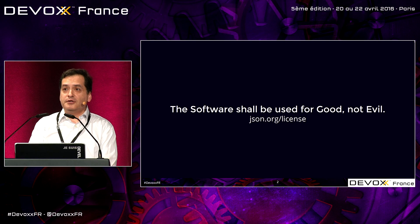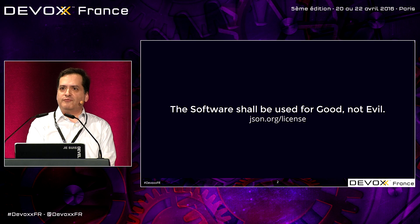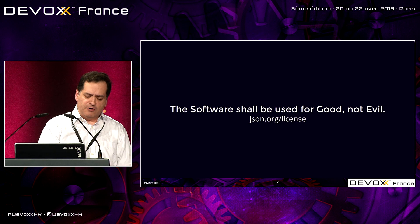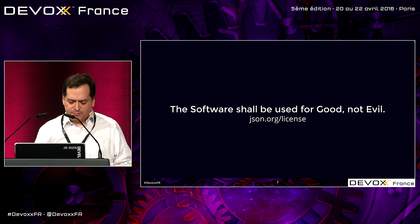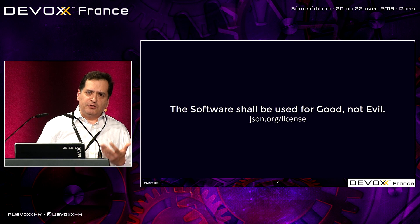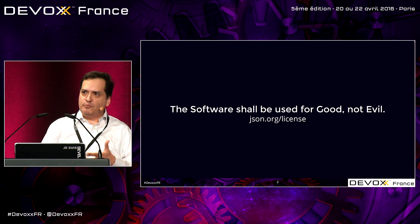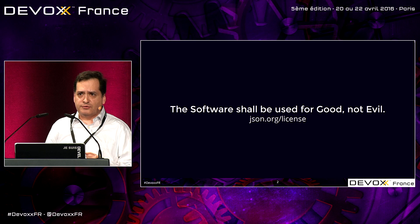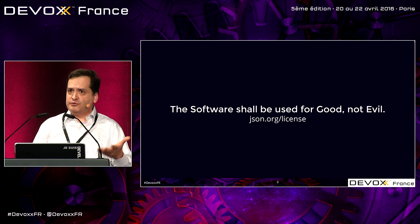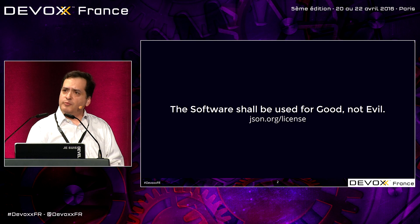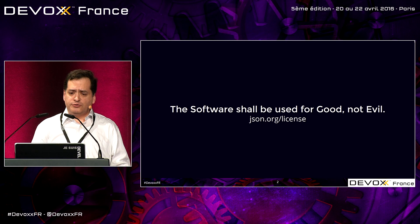The software shall be used for good, not evil. We advocates of open source software are really annoyed by this, not because we like evil or hate good, but because we believe that the principle of open source is that it should not be discriminatory and it should not impose use restrictions. If you can allow restrictions on arbitrary evil uses, you can then restrict commercial use and all sorts of other uses, and that's really what open source is very much opposed to.